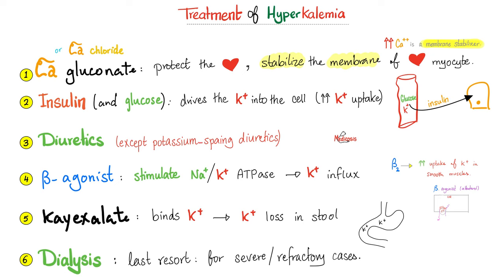Don't believe me? Recall tetany. Tetany is low calcium. When calcium is low, what happens to nerve excitability? It goes up, because calcium is contra-excitability. That's why in tetany, serum calcium is low but nerve excitability is high. What do you get? Carpal spasms, pedal spasms, all kinds of spasms — these are nerve excitabilities.